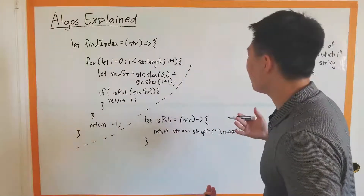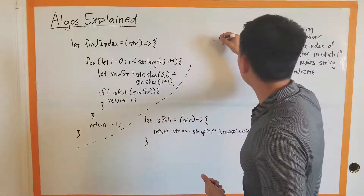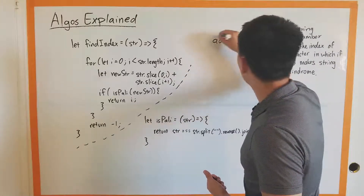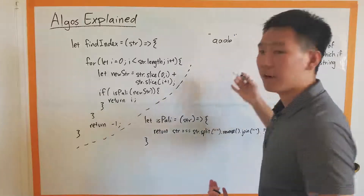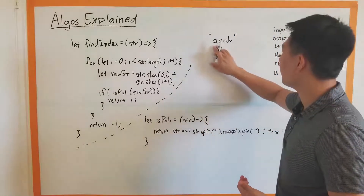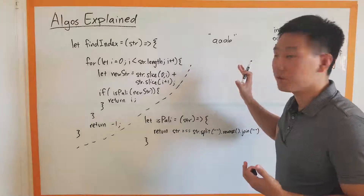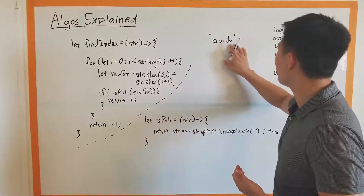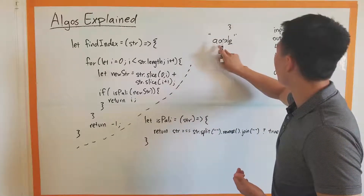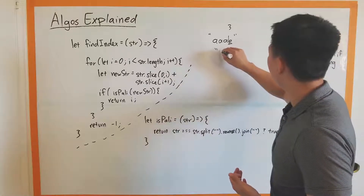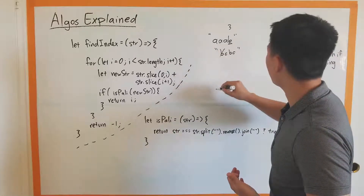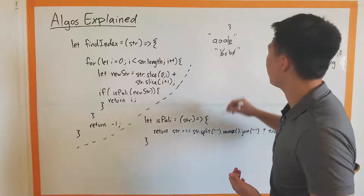So what does that mean? If the input is like triple A and a B, what they're asking is: what is the index of the letter that if we take it out, it'll be a palindrome? So it'd be index three. And if it was like B, C, B, C, you can take out that one or you can take out the C.